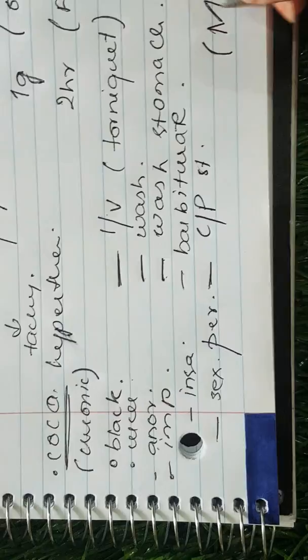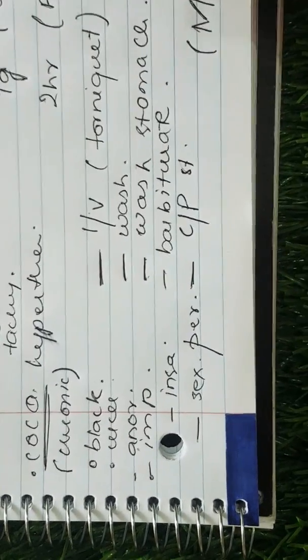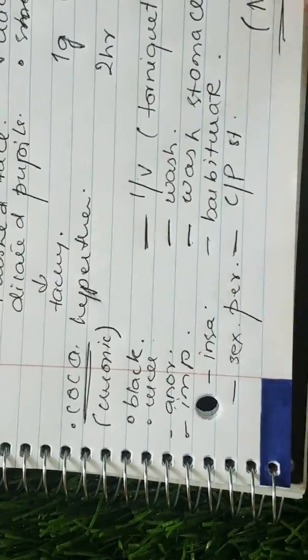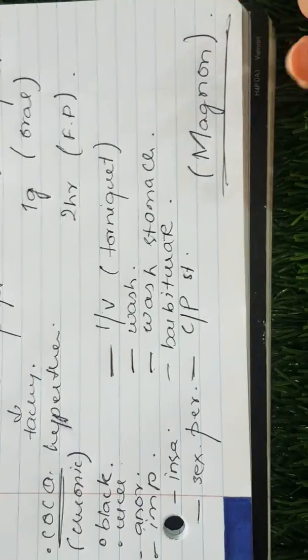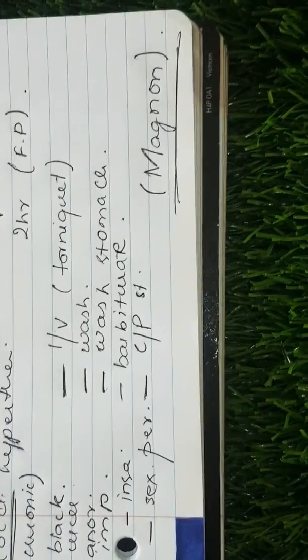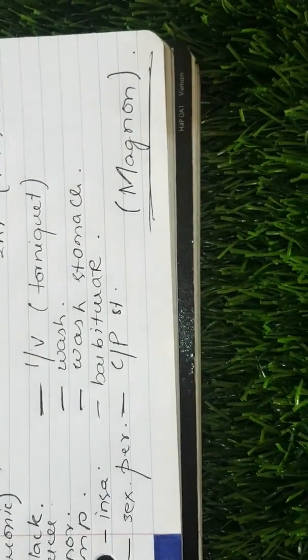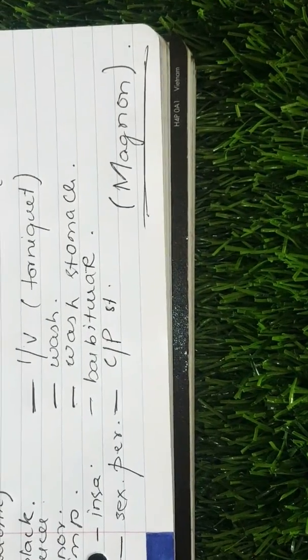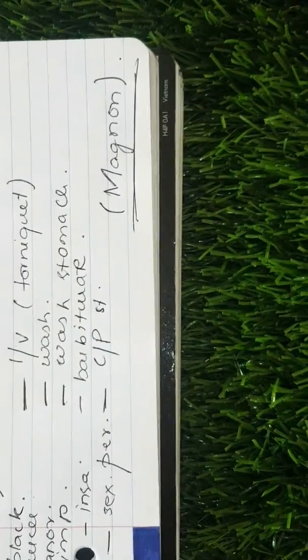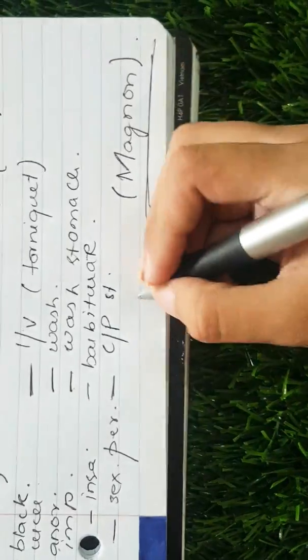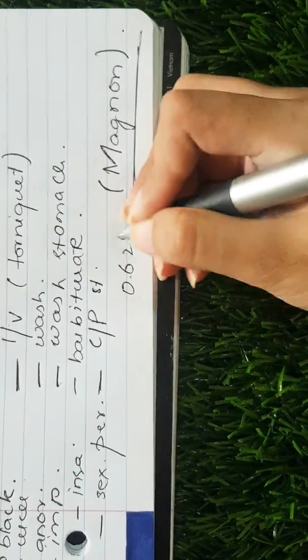The main feature of chronic cocaine poisoning is the magnet sign or magnet symptoms. The patient believes that small grains of sand or small insects — also known as cocaine bugs — are crawling under the skin. This can be treated with ergot derivatives, for example bromocriptine, given at a dose of 0.625 mg.